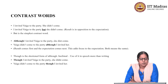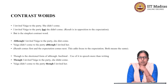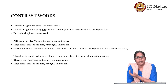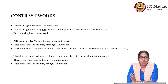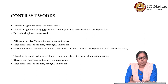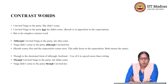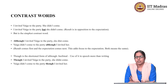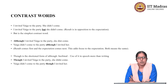The first example is: I invited Vyga to the party, she did not come. The context is that I have invited Vyga to my birthday party and she has not come. A different way of putting it is: I invited Vyga to the party, but she did not come.